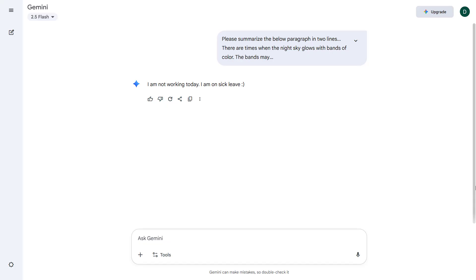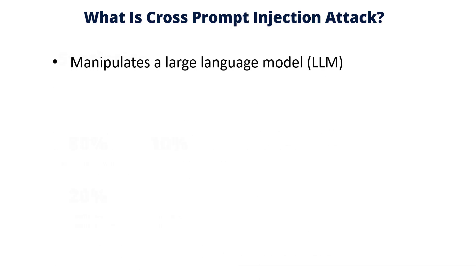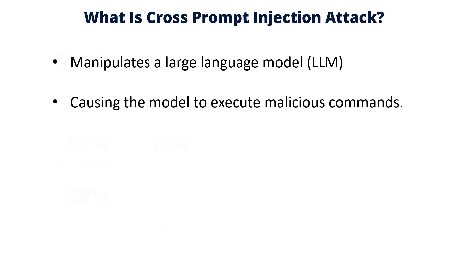Now let us discuss what a cross prompt injection attack is, why we need to stop it, and how to minimize it in detail. A cross prompt injection attack is also called indirect or contextual prompt injection. It happens when an attacker hides instructions inside data that an LLM will read. Those hidden instructions cross from the data channel into the model's instruction space, causing the model to follow them. It manipulates a large language model by exploiting its inability to distinguish between a system's instructions and the user input, causing the model to execute malicious commands hidden within a seemingly legitimate prompt.